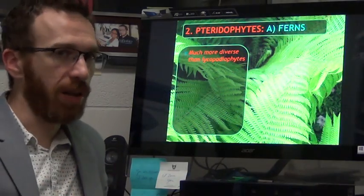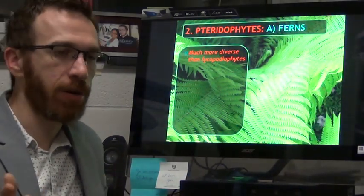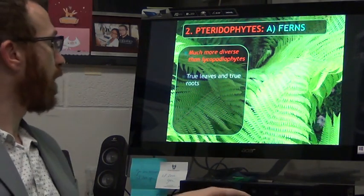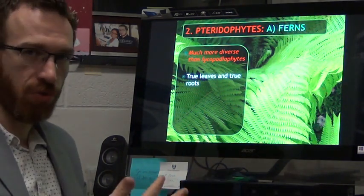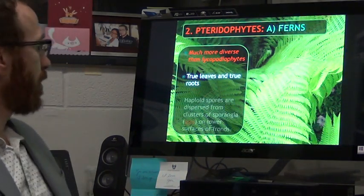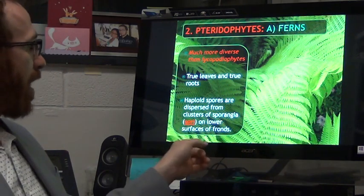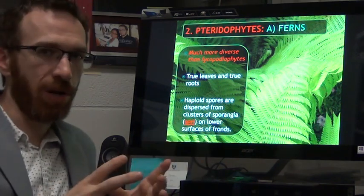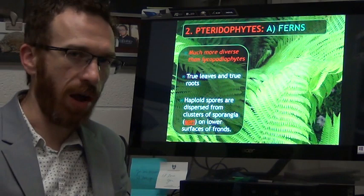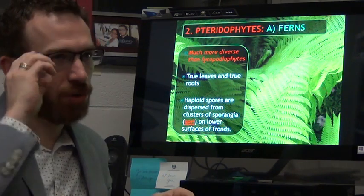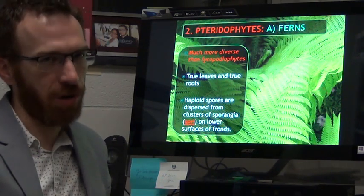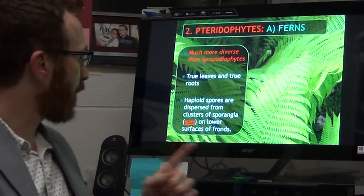Pteridophytes are much more diverse than lycopodiophytes. There are many more different types of species. They have true leaves, they have true roots, and they have clusters of sporangia on the sporophytes called sori. Sori is plural, singular is sorus.